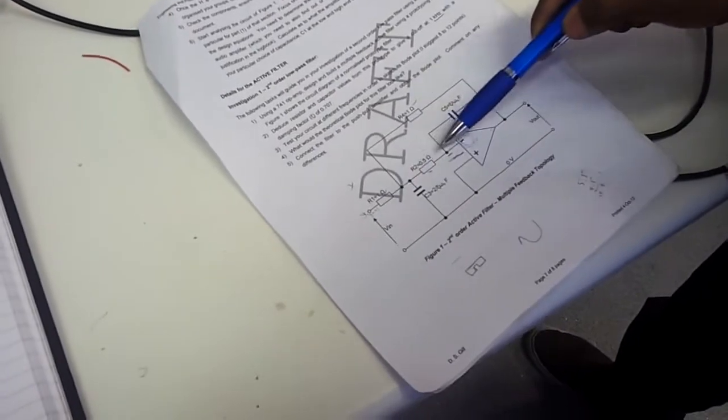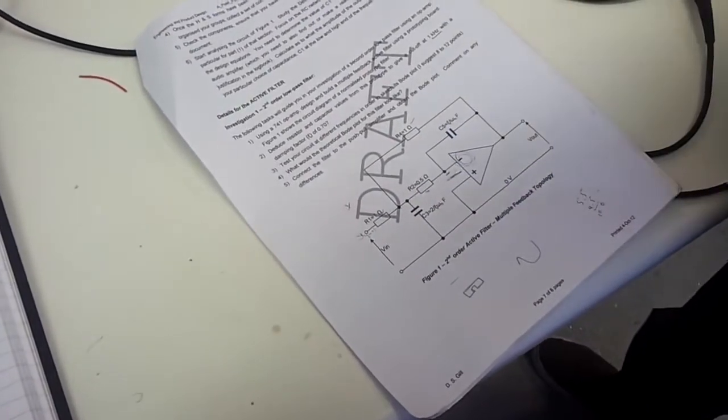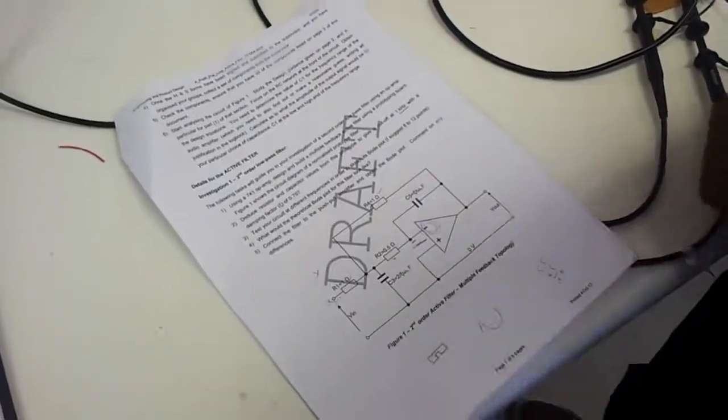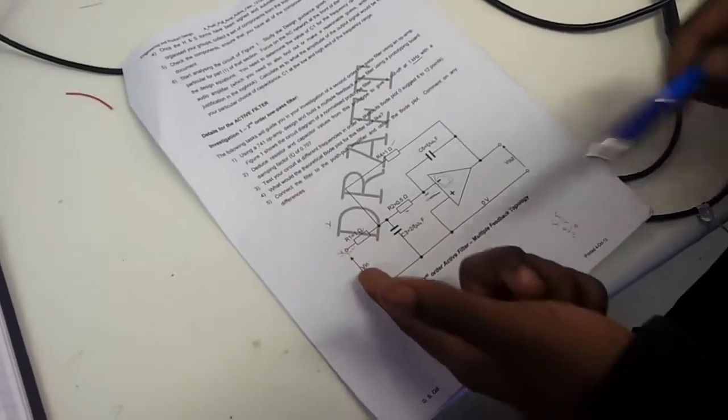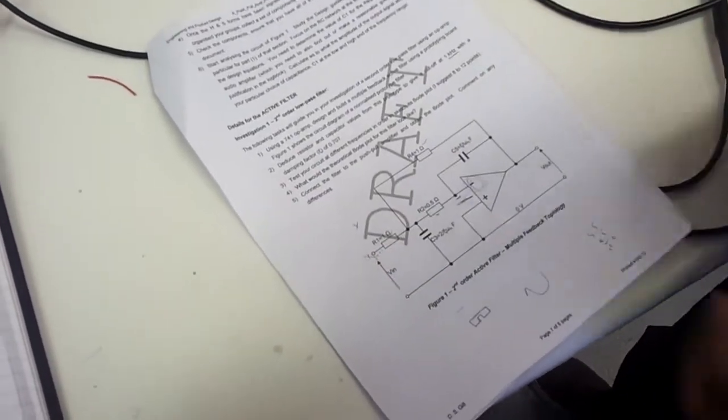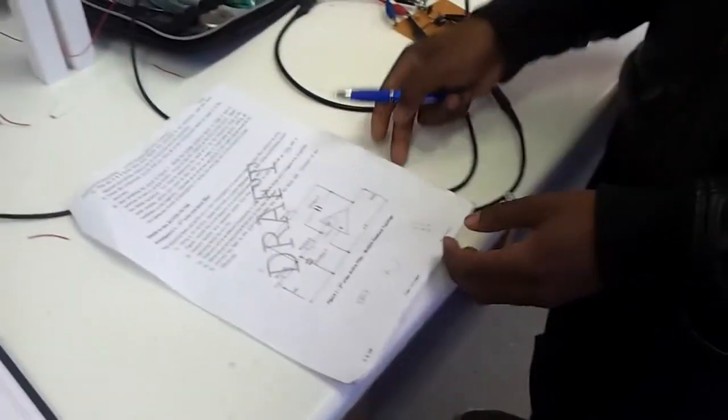Now since this one was half of this one we therefore had 5 kilo ohm for R5. So we'll basically be sending in some input signal VIN of 50 millivolts maximum and then we expect some output at our pin number 6 of our LM741 chip which is our operational amplifier.